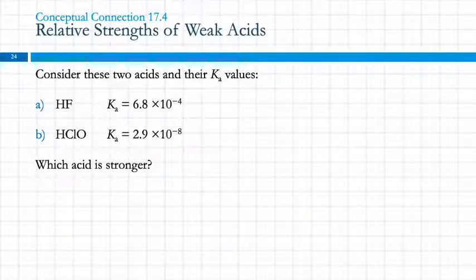Consider these two acids and their Ka values. Which acid is stronger? HF is stronger because the acid dissociation constant is larger.